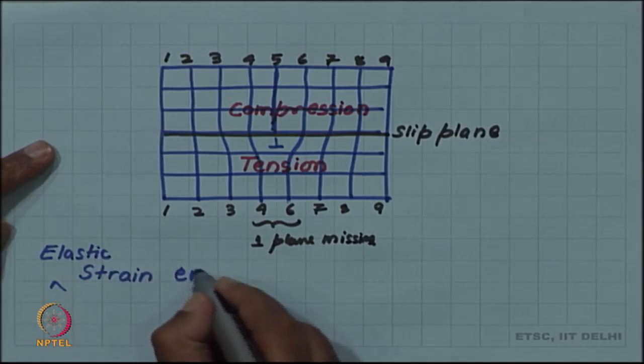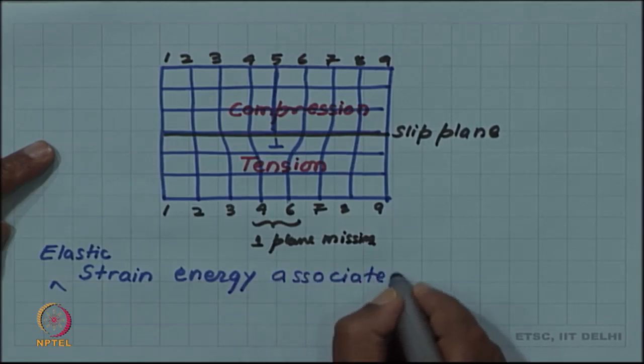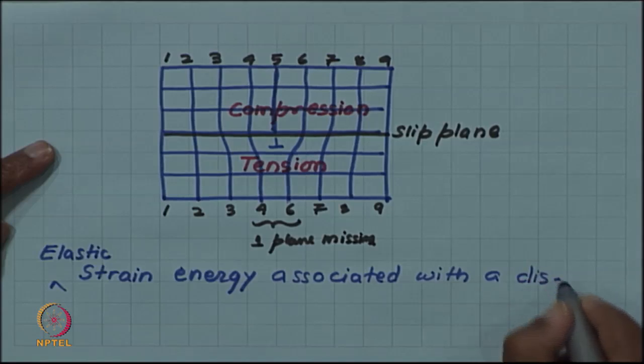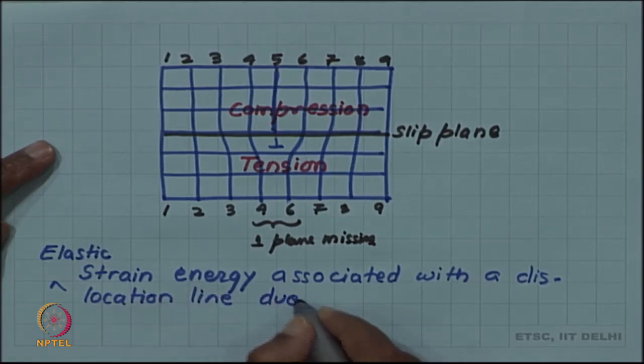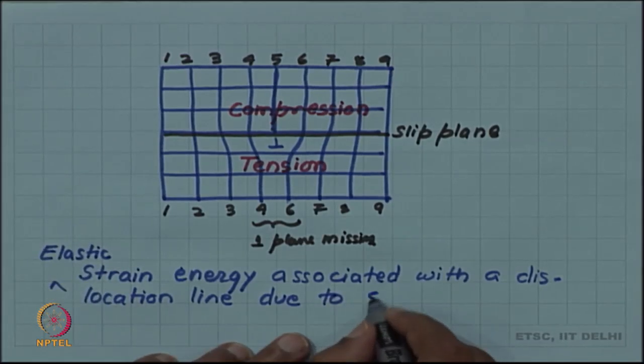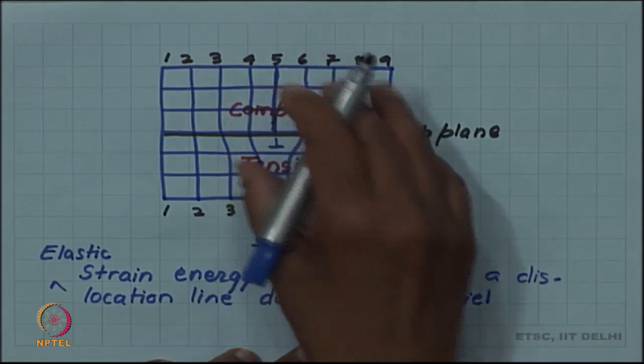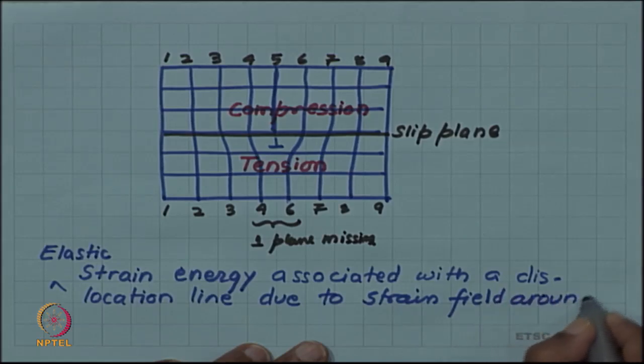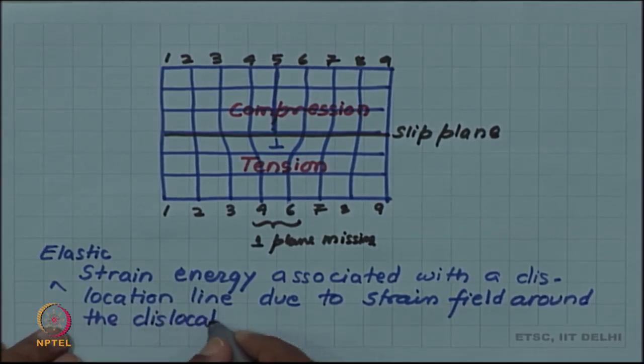Elastic strain energy associated with a dislocation line due to a dislocation line. We can call it strain fields around it - atoms are disturbed and atoms are moved away from their equilibrium position around the dislocation line.